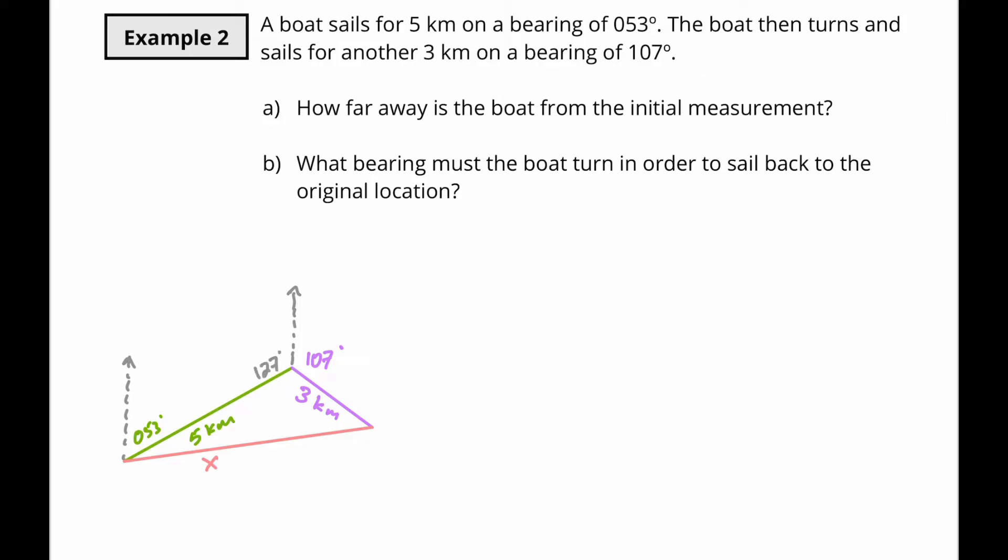And if I know that this is 127 and this is 107, then if I take 360 and I subtract 127 plus 107, I'm going to get the remaining measurement. And that's going to be 126 degrees. So this measurement here is 126 degrees.